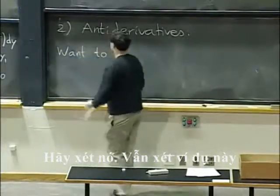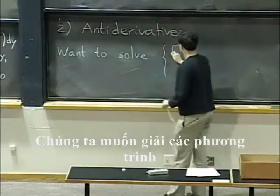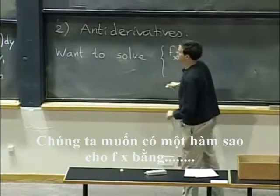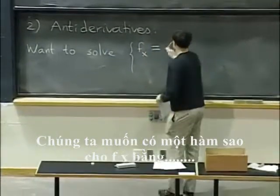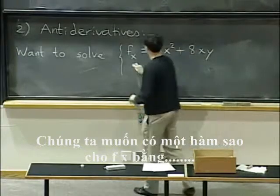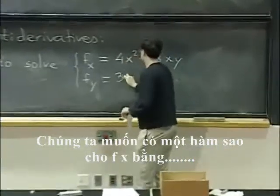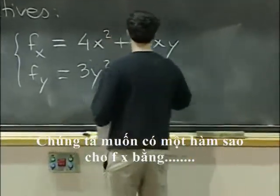OK, so let's still do it with the same example. So we want to solve the equations. We want a function such that f sub x is 4x squared plus 8xy.